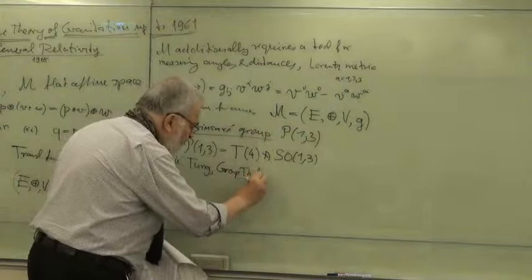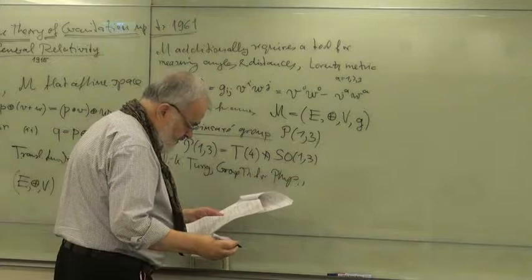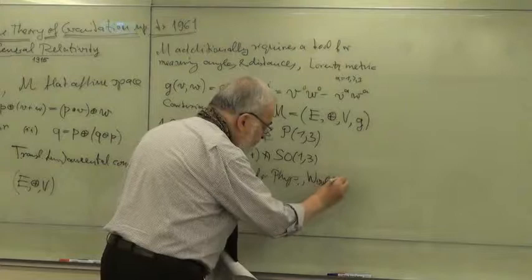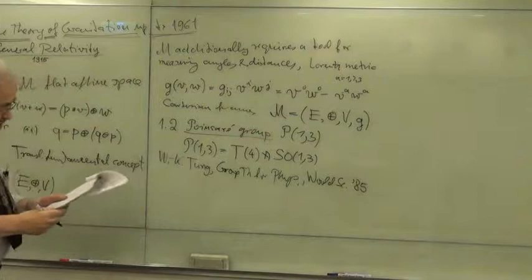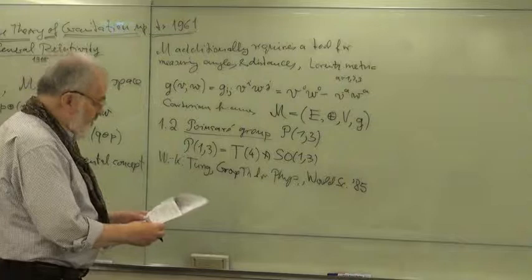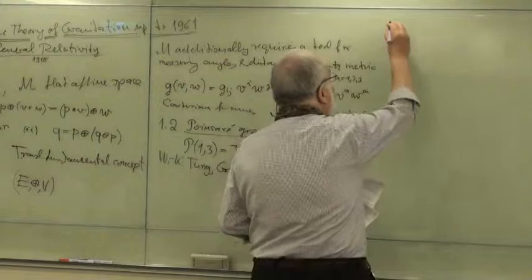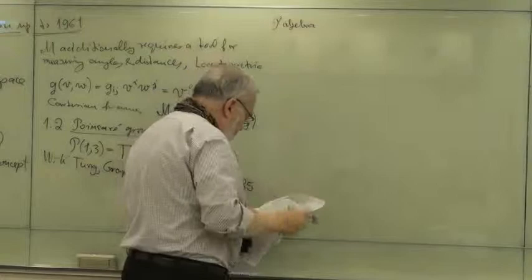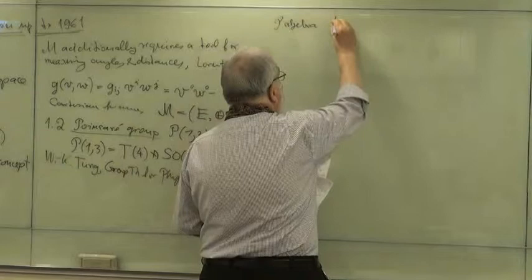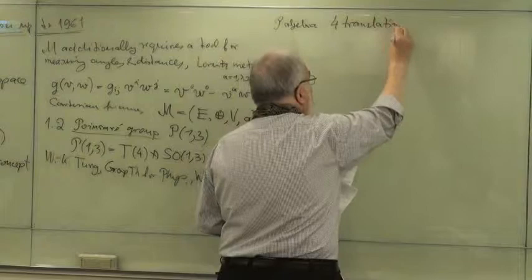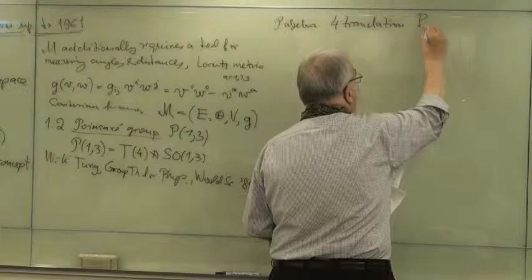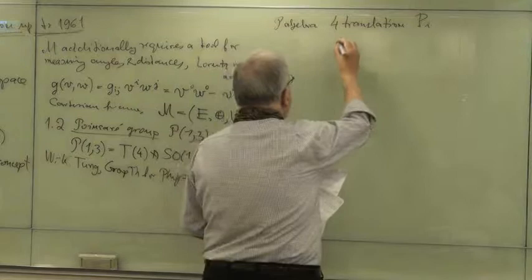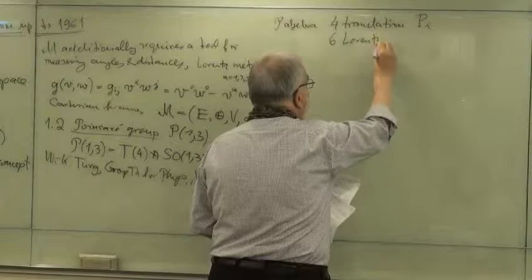It's called Poincaré for Physicists, World Scientific 85 I believe. What I would like to do, because that's good for understanding the structure, is to write down the Poincaré algebra. I have generators of translations, four translations. The generators are called Pi, where i runs from zero to three.